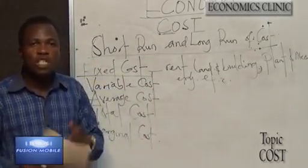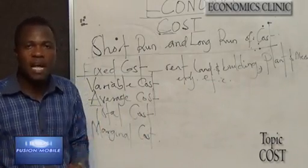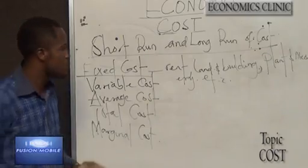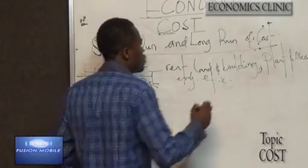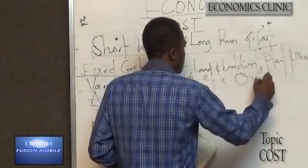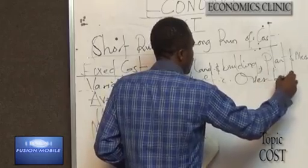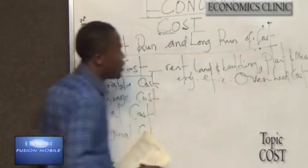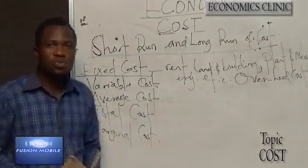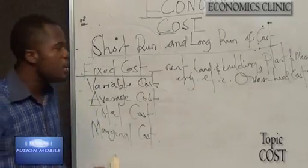They don't change as the cost of raw materials change. Fixed costs can also be referred to as overhead costs. Overhead costs. They do not vary with the level of output, no matter the level of input.